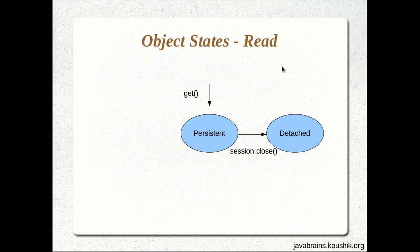Let's take a look at a read. For a read, we do not do a new — we do a session.get. We get the object depending on the primary key that we pass to Hibernate; Hibernate pulls up the actual record from the database and gives us the object itself. The object that Hibernate gives us via session.get is a persistent object — by default, the object goes into a persistent state. I can make changes to that object and Hibernate is automatically going to update the database.